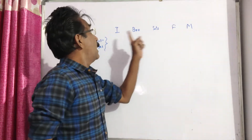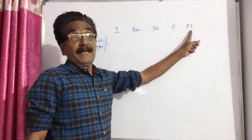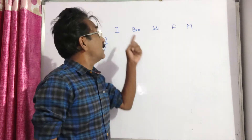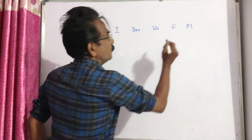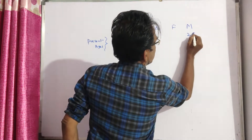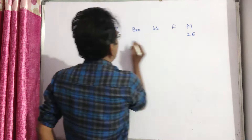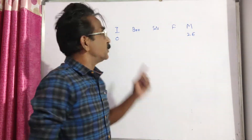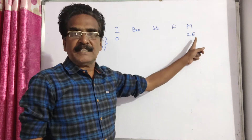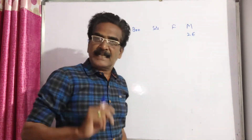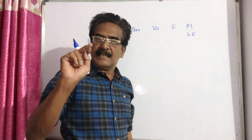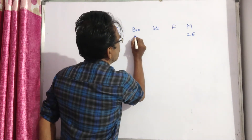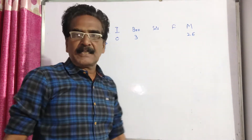My mother was 26 years old when I was born. So when I am at zero, my mother was 26 years old. My brother is three years elder to me, so when I am zero, my brother will be three years old.